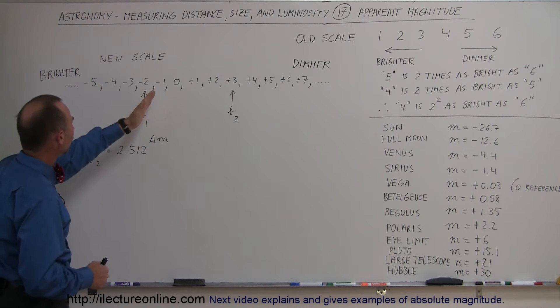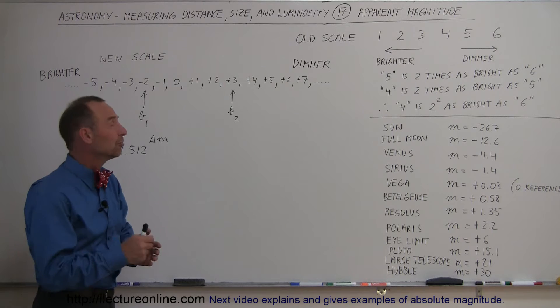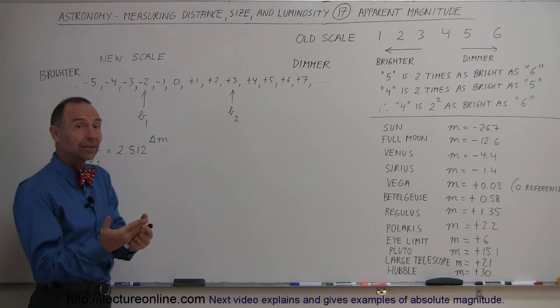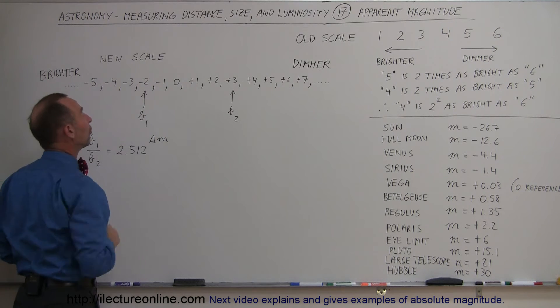The scale worked the same way, smaller numbers are brighter, bigger numbers are dimmer, but we realized we also needed negative numbers because some objects in the sky were actually brighter than a one. They were brighter than a zero, so we kept on going, minus one is brighter than zero, minus two is brighter than minus one, and so forth.